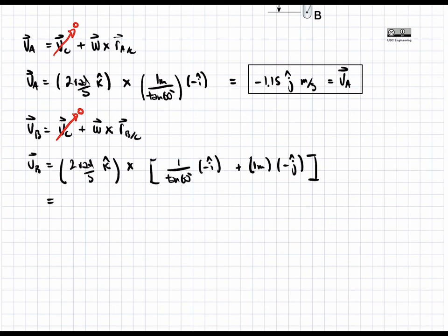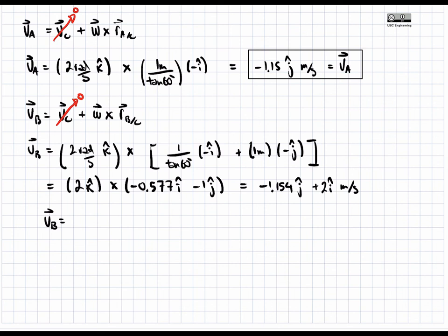It gives the following result and condenses down to 2k crossed to negative 0.577 i hat minus 1 j hat. And this is equal to negative 1.154 j hat plus 2 i hat meters per second. So VB is equal to 2i minus 1.154 j hat meters per second. And this is our final answer for VB.